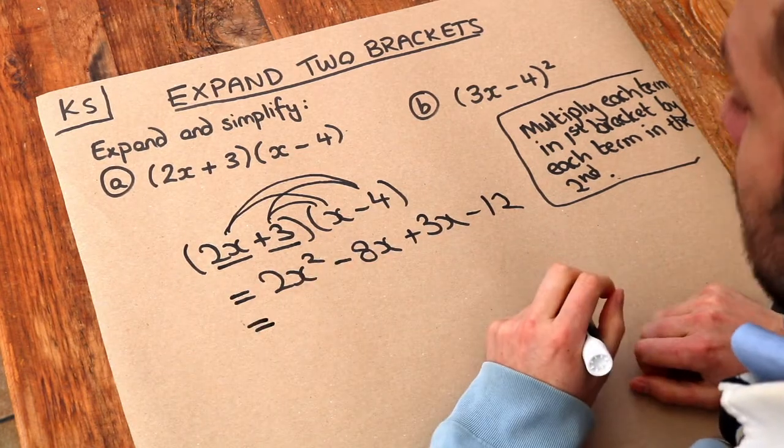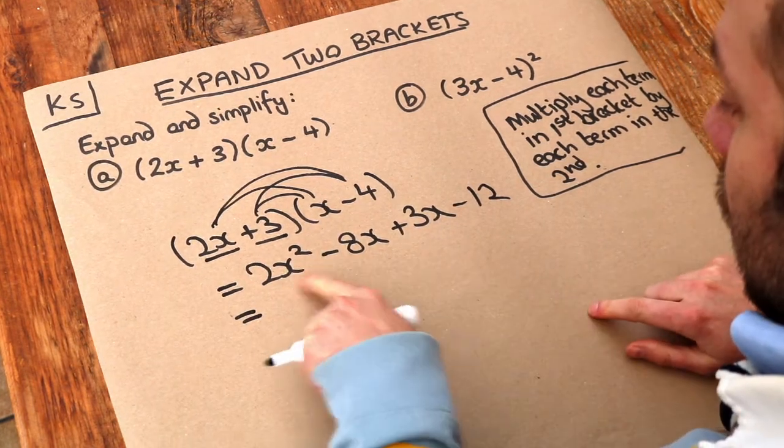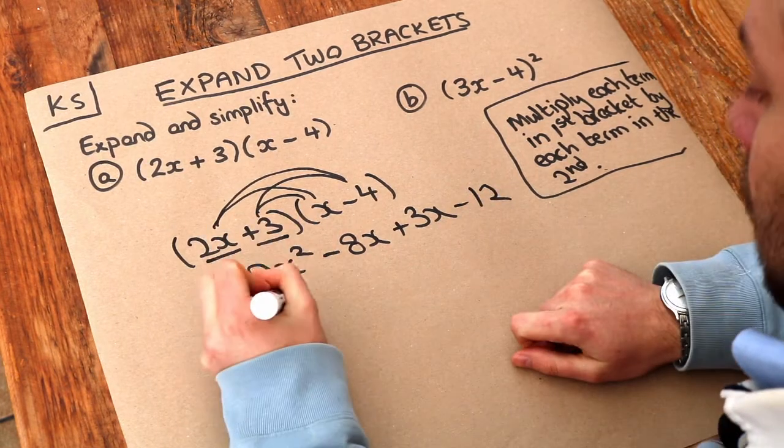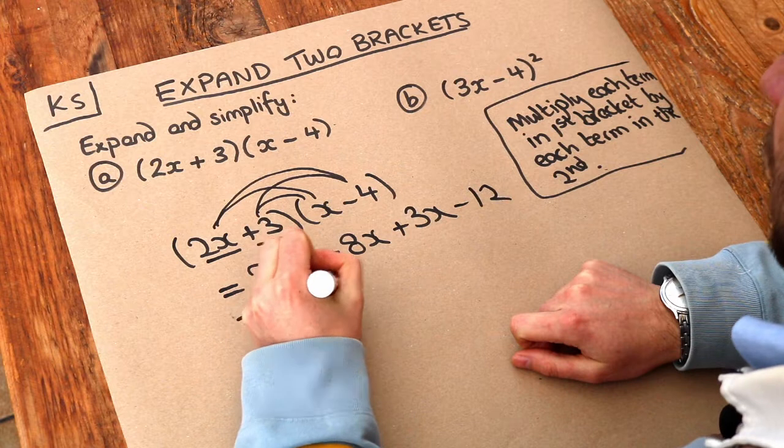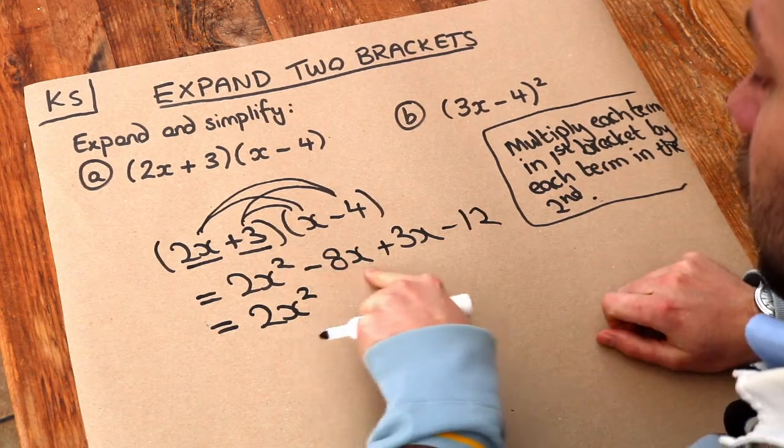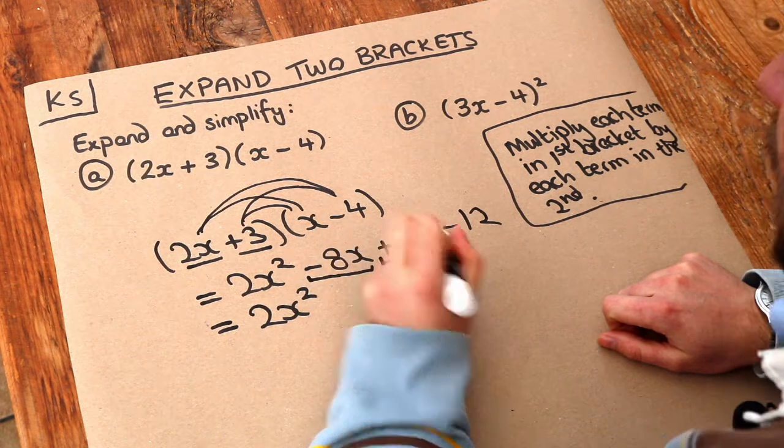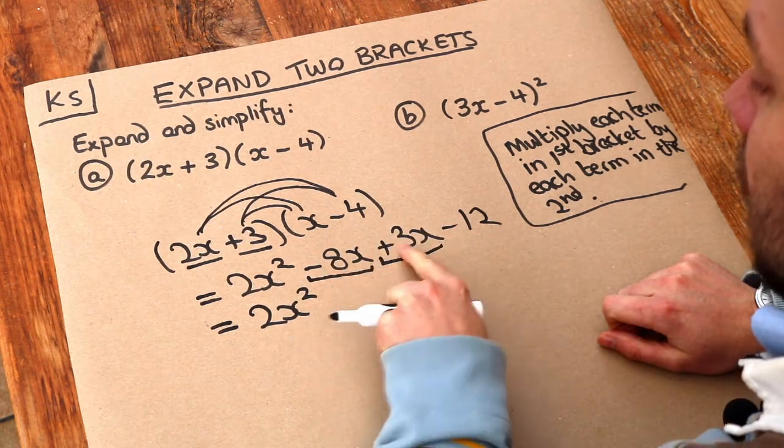And then we can just collect like terms. So this x squared term, there's no other x squared term so there's nothing we can collect it with. So the 2x squared just stays the 2x squared. However, we've got an x term here and an x term here. If I just underline those to make it easier to collect.